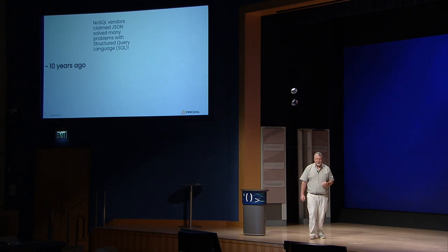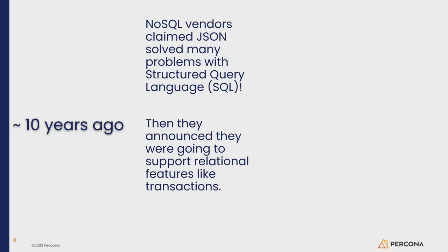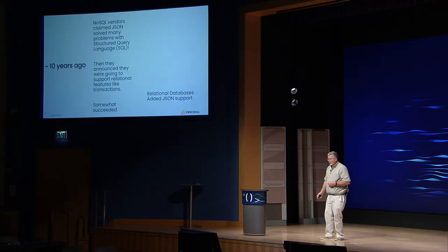Roughly about 10 years ago, we were told that the NoSQL databases were going to kill off the relational databases because of all the problems with structured query language and the model. They also decided they were going to do all sorts of relational type tricks like transactions, and they somewhat succeeded. But while all that was going on, the relational database vendors came out and added JSON support, which kind of undercut the legs for a lot of the NoSQL world.